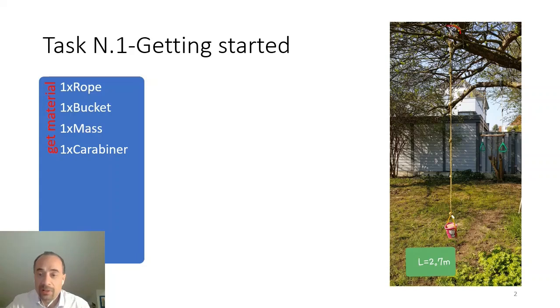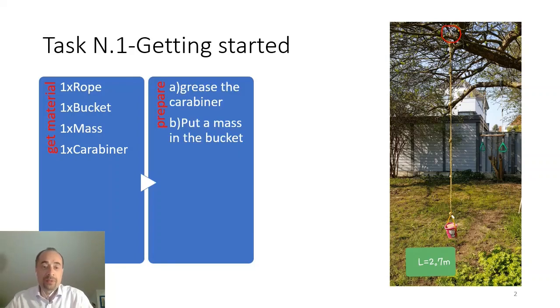Carabiner is needed to fix the rope to the swinging point which is in this case a branch of a tree. Then we prepare the experiment by greasing the carabiner and putting the mass in the bucket.